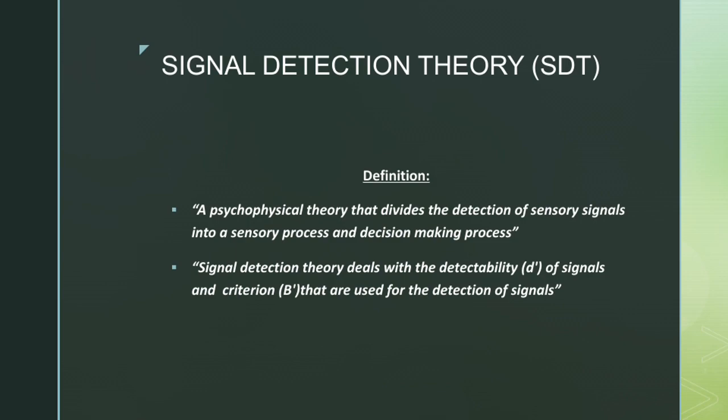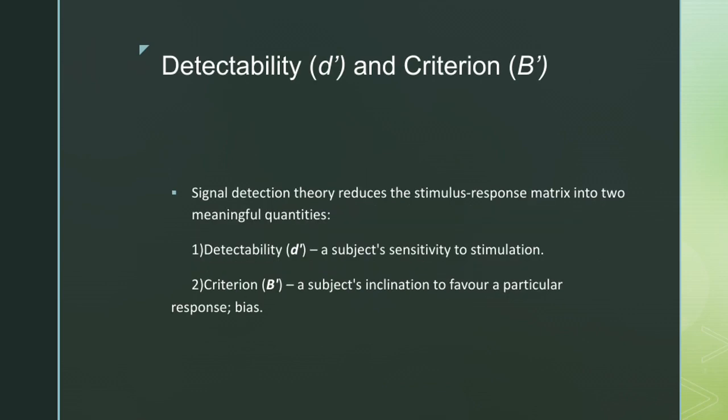What is detectability and criterion? Signal Detection Theory reduces the stimulus-response matrix into two meaningful quantities. First, detectability — it is the subject's sensitivity to stimulations. Second, criterion — it is the subject's inclination to favour a particular response.